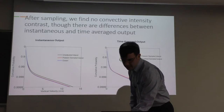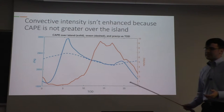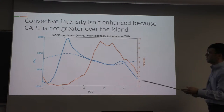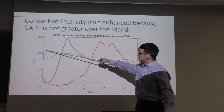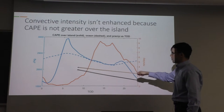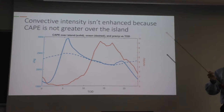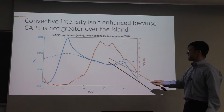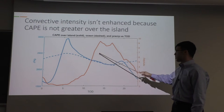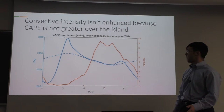Convective intensity isn't enhanced because CAPE isn't greater over our island. This plot shows CAPE in J/kg versus time of day (composited over 25 model days). The dashed line is oceanic mean CAPE; the solid line is island CAPE. At times when precipitation is occurring — shown by a red precipitation line — CAPE is not higher over our island compared to over our ocean. The question is: why?